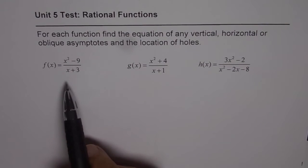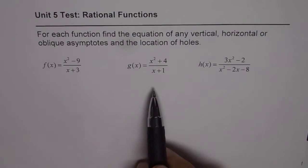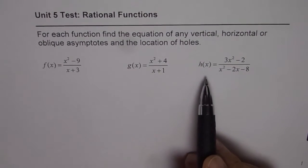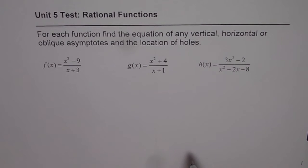f of x equals to x square minus 9 divided by x plus 3, g of x equals to x square plus 4 divided by x plus 1 and h of x equals to 3x square minus 2 divided by x square minus 2x minus 8. I would like you to pause the video and answer this practice question for the test.